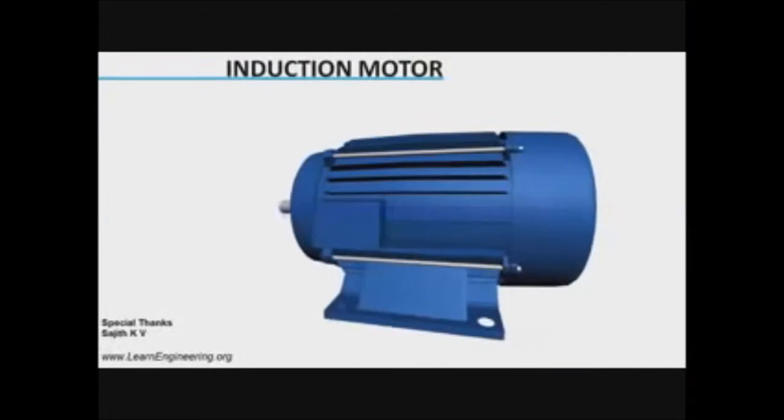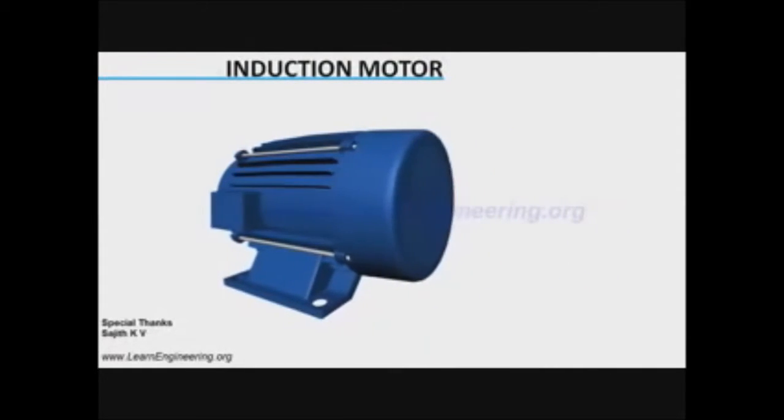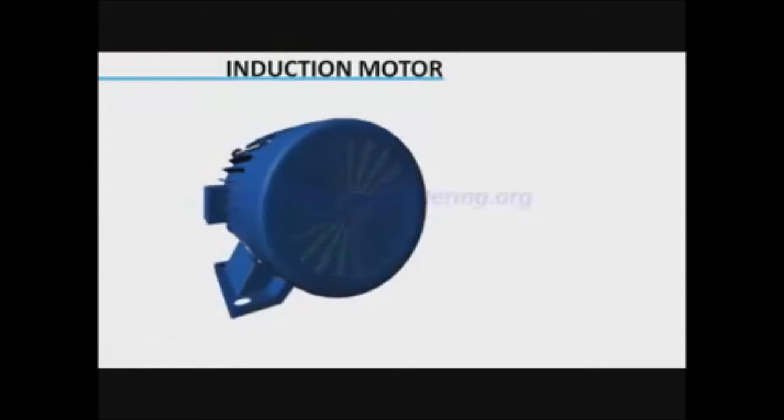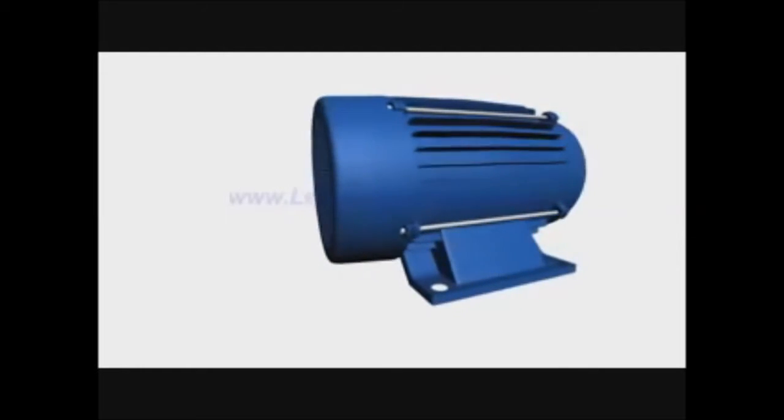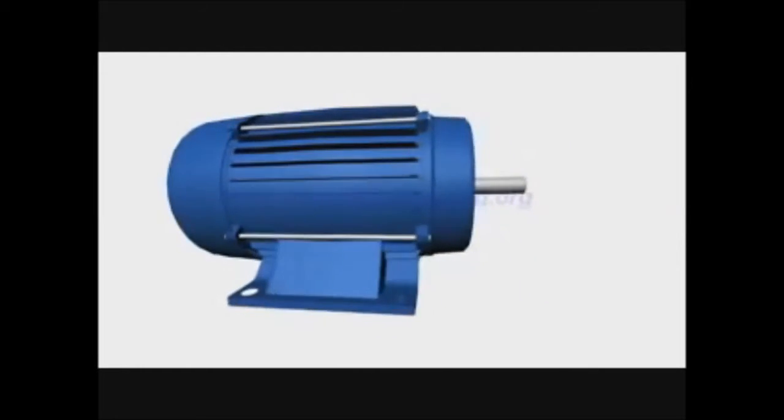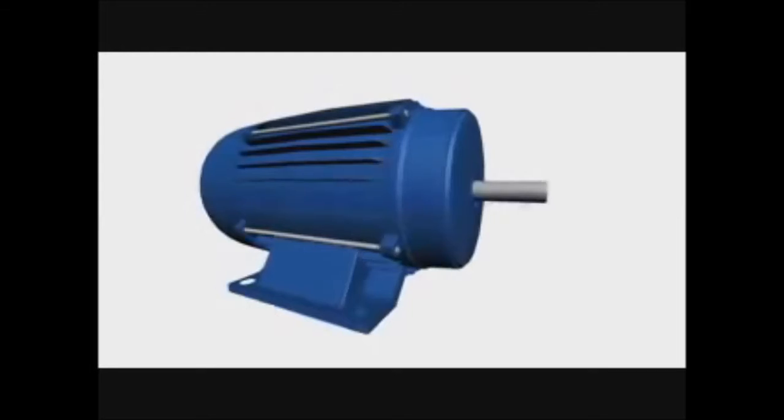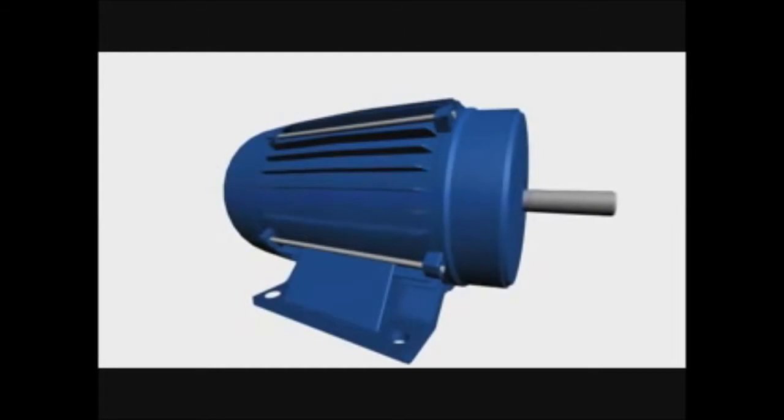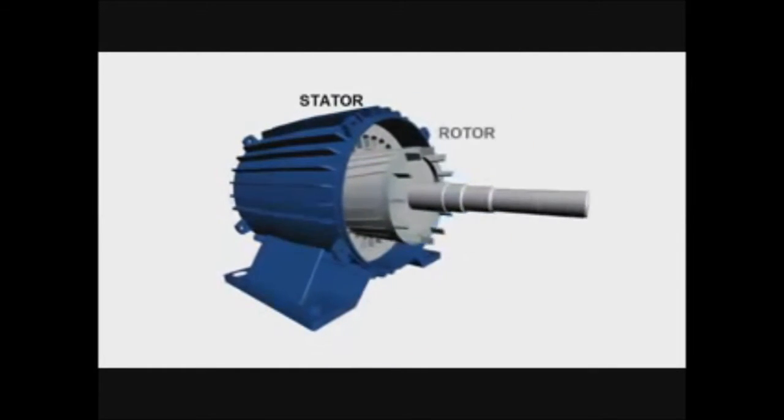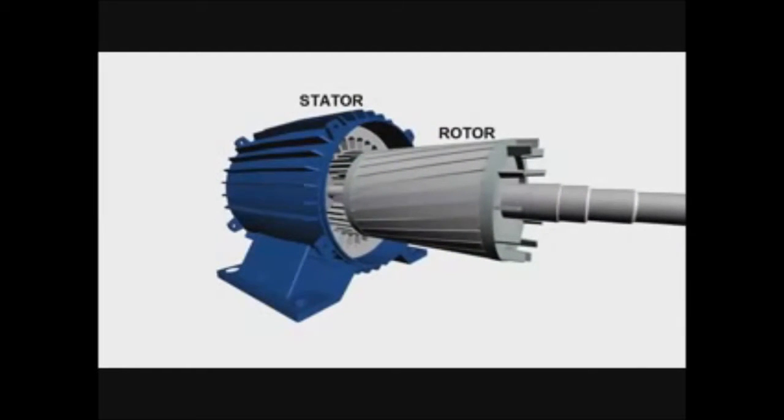Induction motors are the most commonly used electrical machines. They are cheaper, rugged, and easier to maintain compared to other alternatives. In this video, we will learn the working of a three-phase squirrel cage induction motor. It has two main parts: stator and rotor. Stator is a stationary part, and rotor is the rotating part.